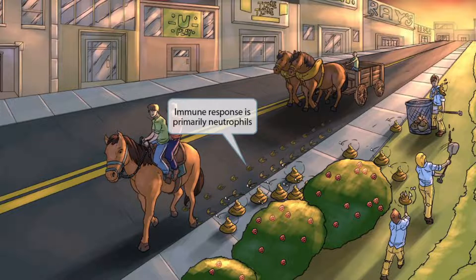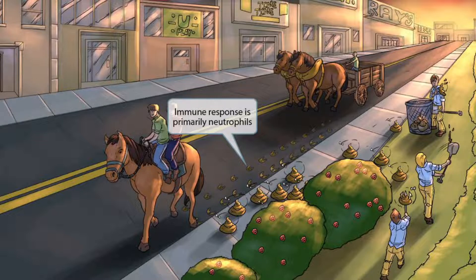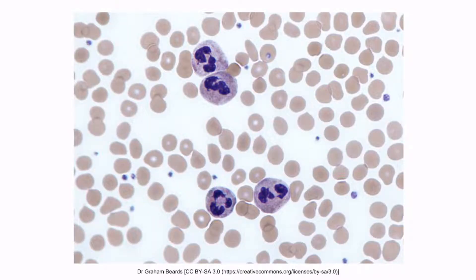Notice that the horse is tracking poop in the street — it must have stepped in the poop earlier, leaving a trail of poop-stained hoof prints. These hoof prints kind of resemble the nuclei of neutrophils. Polymorphonuclear cells, or neutrophils, are named after their nuclei, and this is included to help you remember that the immune response to Shigella is primarily neutrophils.